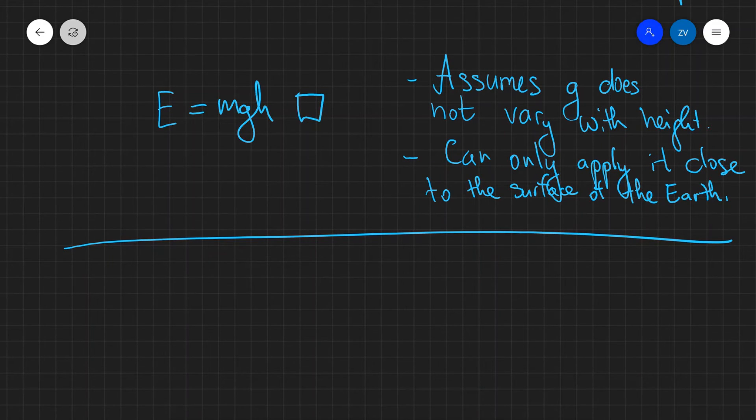Whenever we, let's say, we have an object a few meters above the surface of the earth and we drop that object, we're perfectly fine using mgh. However, this equation here assumes that the g remains constant no matter what height it is above the gravitational field.